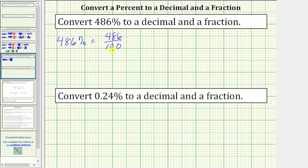And now because a fraction bar means division, we can write this fraction or ratio as a quotient. This is equal to 486 divided by 100. The shortcut for dividing by 100 is to move the decimal point to the left two places.